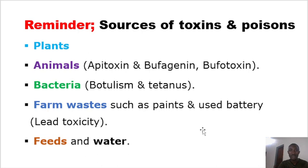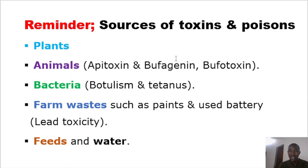Animals also have sources of toxins. For example, we have apitoxin, which is mainly from the bee. Once the bee stings you, it gives you toxins which we call apitoxin, and it is made up of various toxins like proteins, enzymes, and peptides. We also have bufogenin, bufotogenin, and bufotoxin — these are amines from the toads.